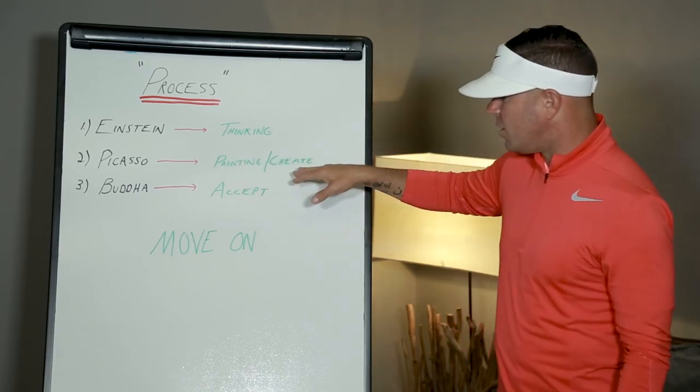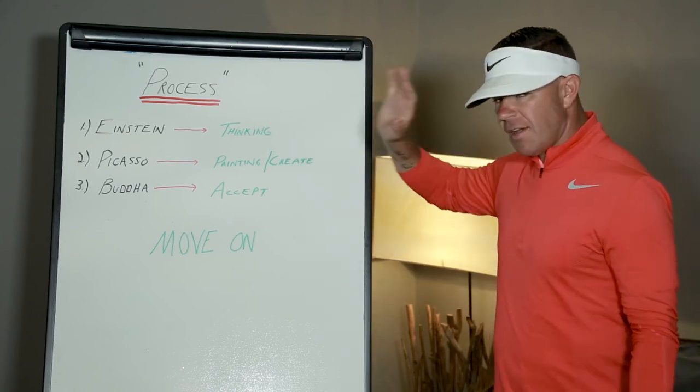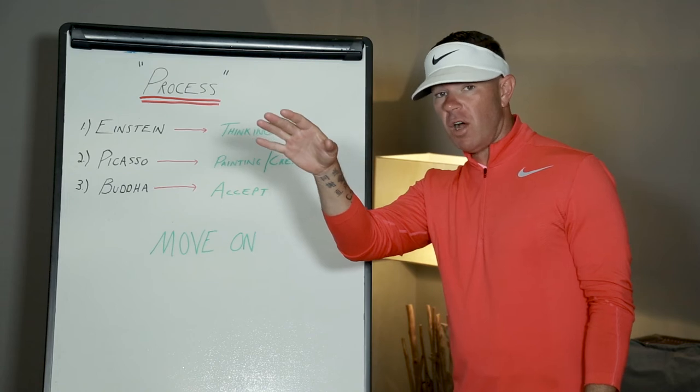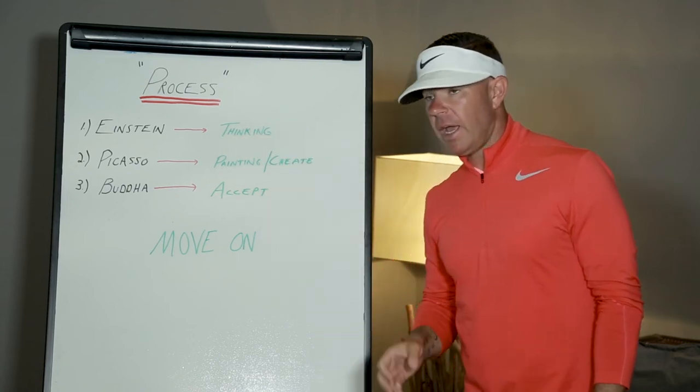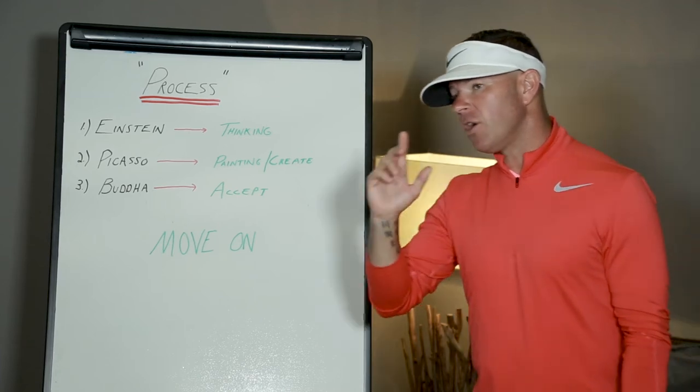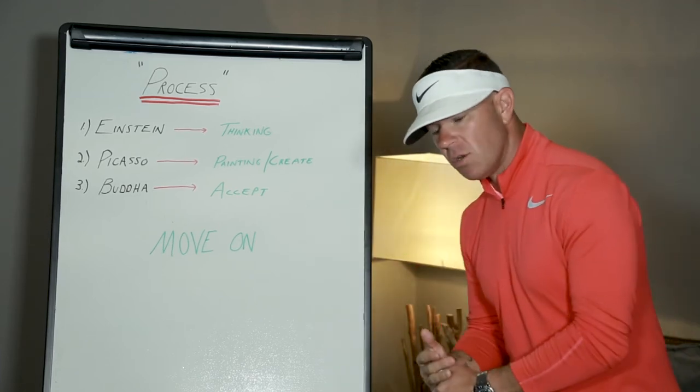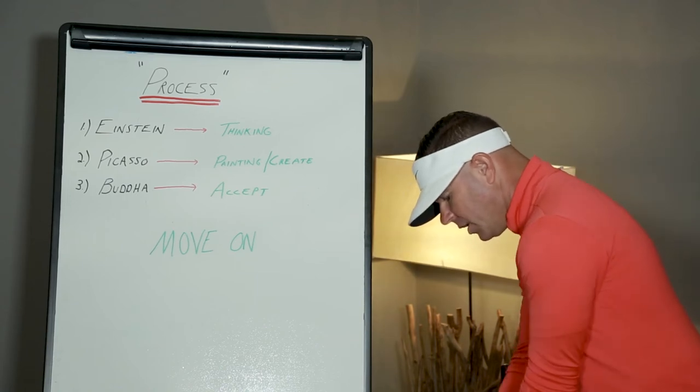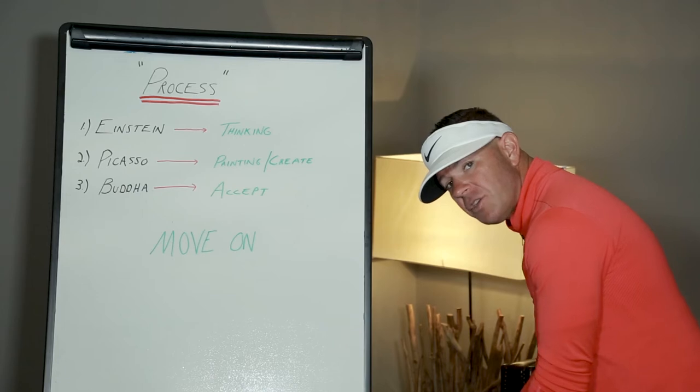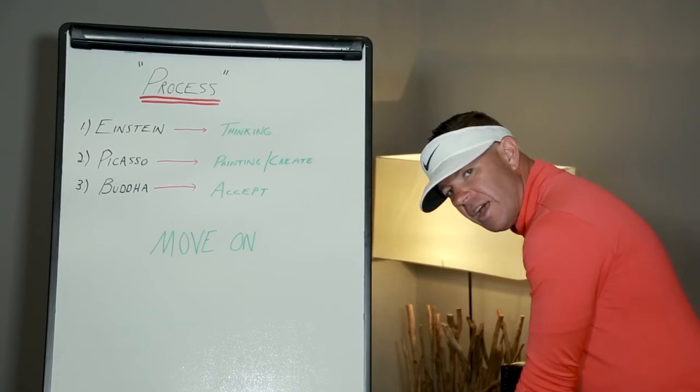Once I get into Picasso, the whole goal is I've decided seven iron's my club. Now I'm going to hit a mid-flight draw. After I ask myself the question, I can see that. Then it's about running the loop and running the awareness. By that, I mean as I'm setting up, I'm feeling the shot in my body and my eyes are going out to create awareness and intent. I'm just moving through the feeling of that shot.